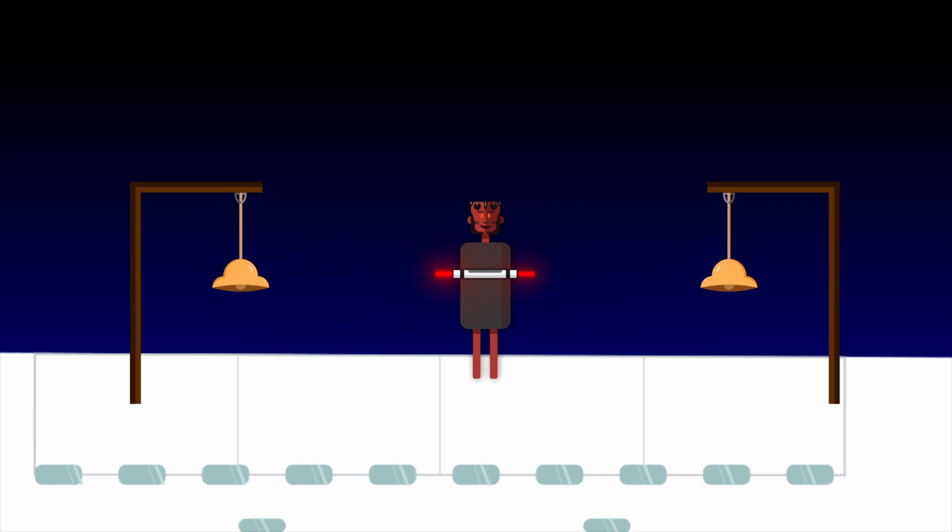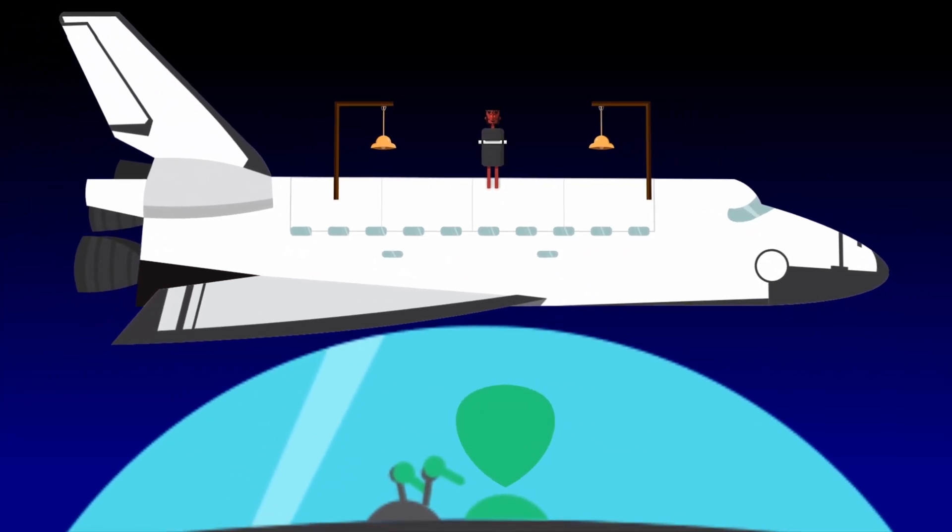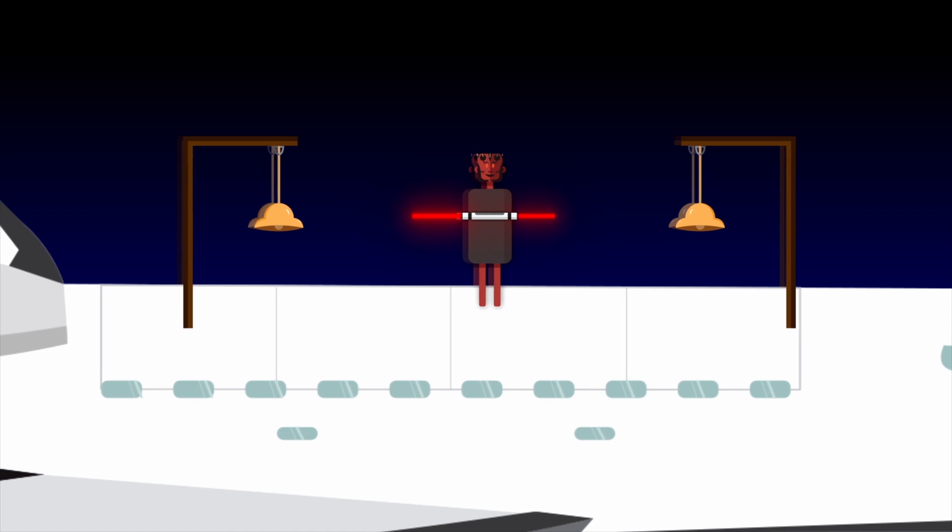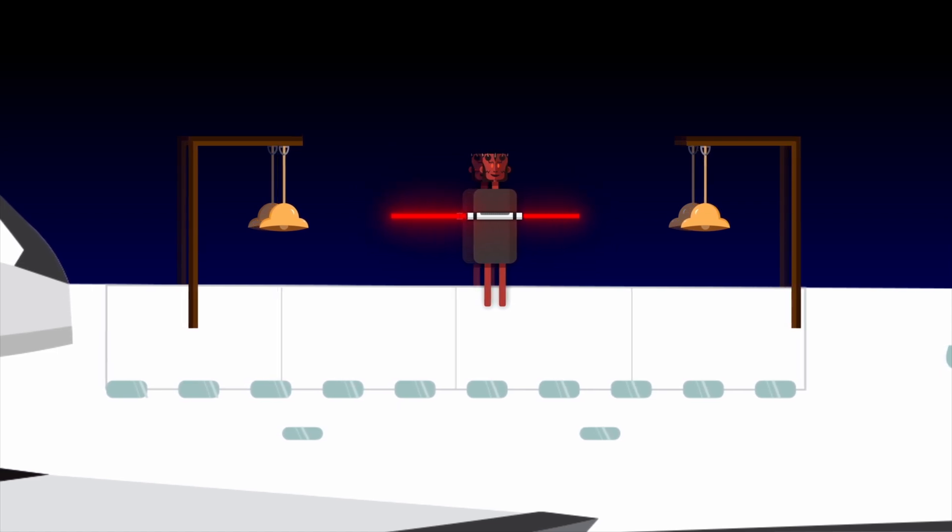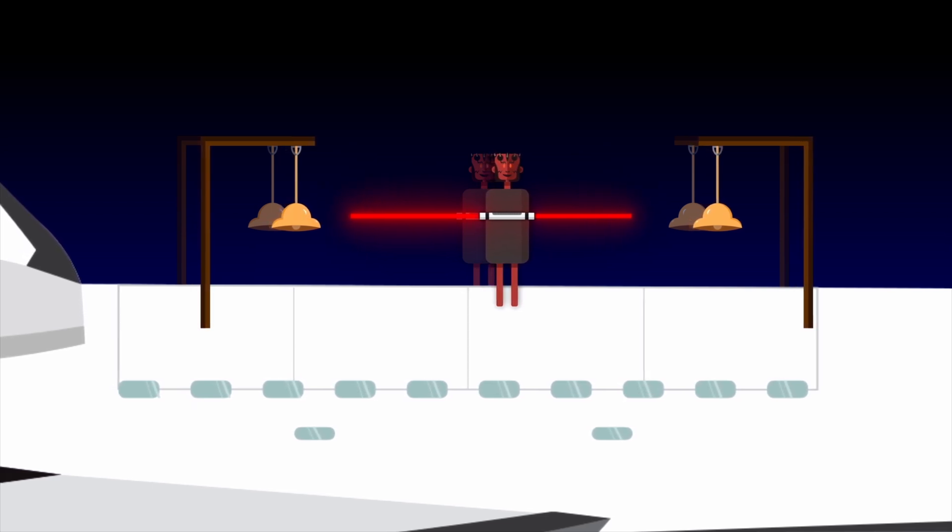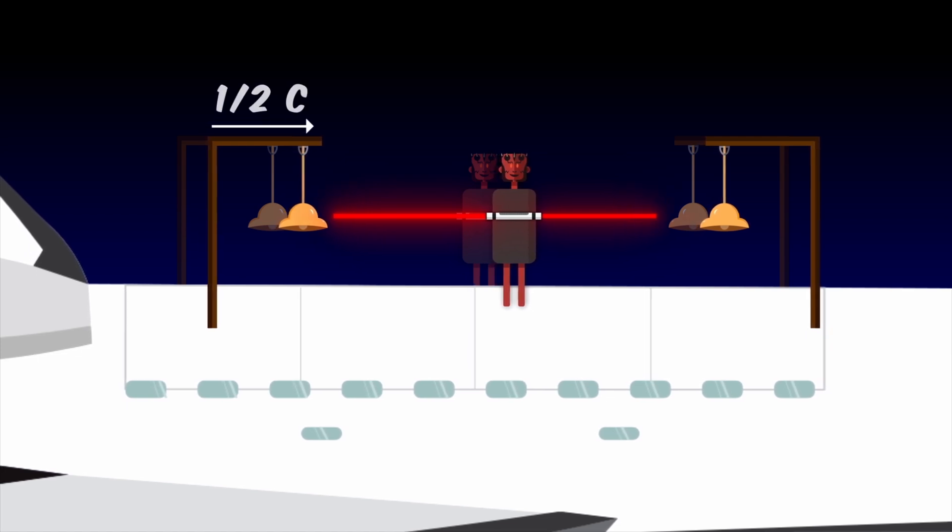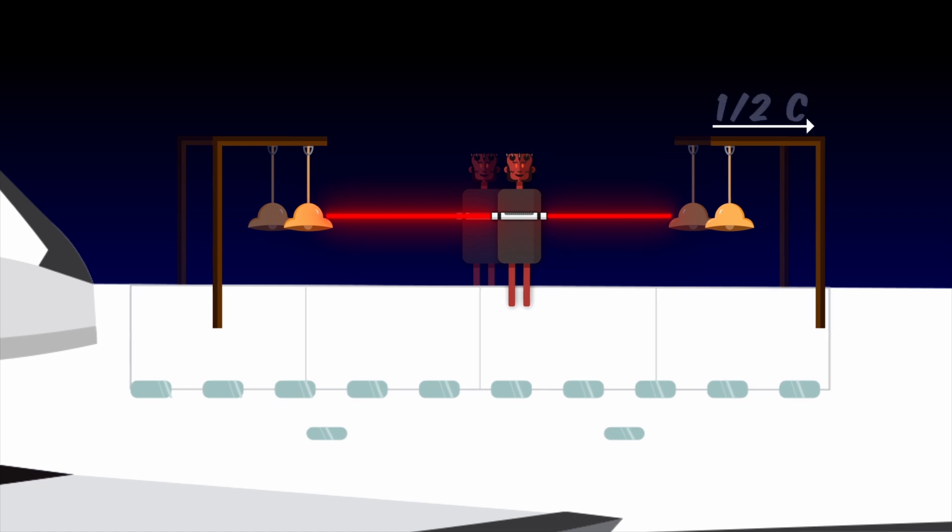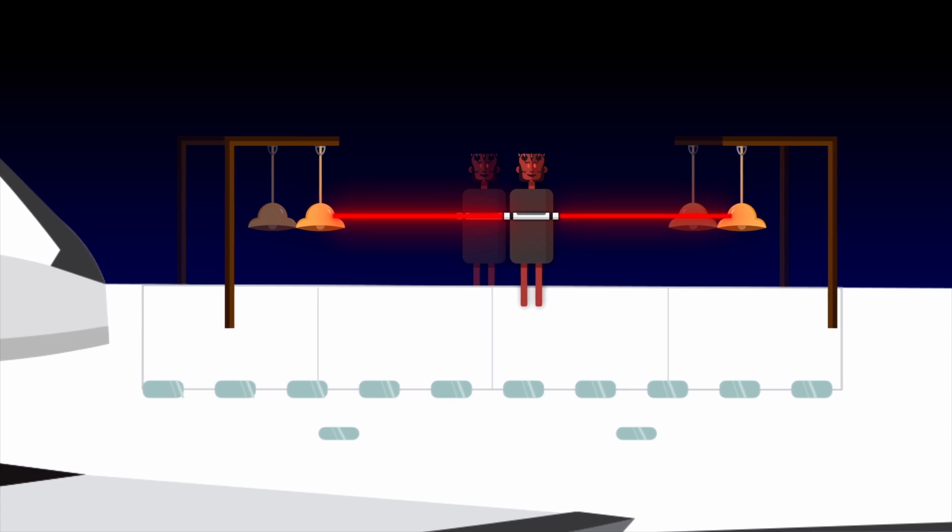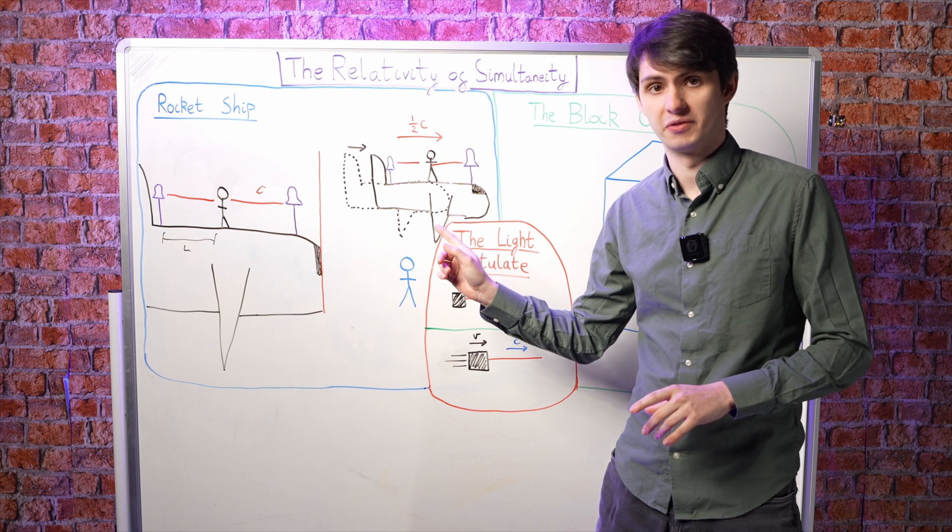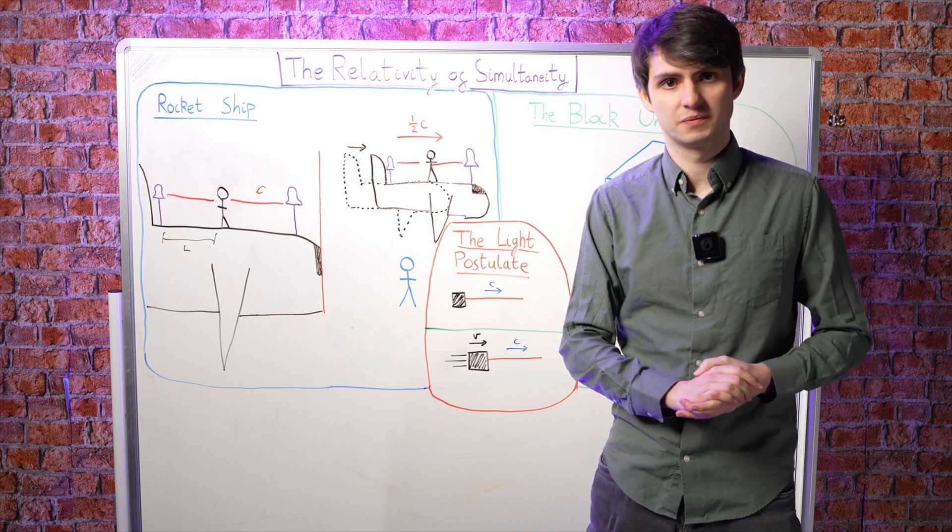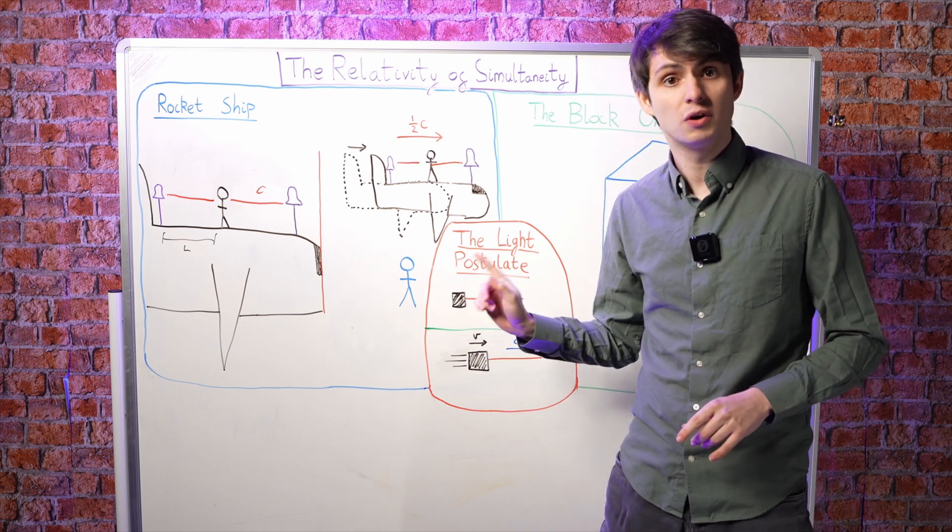Now, let's consider instead your point of view from the Earth as the rocket is shooting past. When your friend is level with you, they switch the laser on, and from your perspective, the light postulate again demands that the two beams travel at the same speed c, regardless of the fact that the laser is moving. But, since the rocket ship is moving, the bell on the left is moving towards the laser at a speed half c, whereas the bell on the right is moving away from it. This means that the beam on the left will take less time to reach its bell than the beam on the right. From your perspective, there won't just be one chime of the bells, you'll hear the left one ringing first, followed by the right one shortly but distinctly afterwards. In other words, from your perspective, the two events will not be simultaneous.